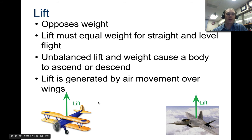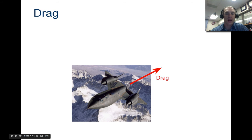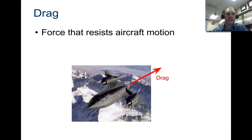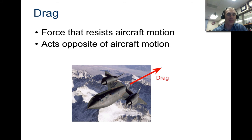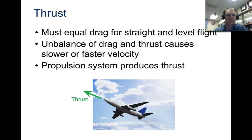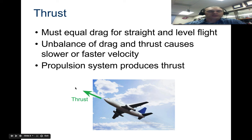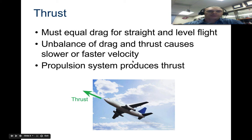Lift is generated by air movement over the wing. Drag is the force going backwards — it resists aircraft motion and is opposite to aircraft motion. So planes are designed to reduce and minimize drag, and the reason they do that is so you don't need as much thrust. Thrust has to equal drag for straight and level flight. An imbalance of drag and thrust causes slower or faster velocity.